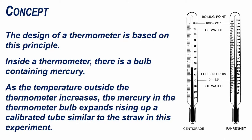Inside a thermometer, there is a bulb containing mercury. As the temperature outside the thermometer increases, the mercury in the thermometer bulb expands, rising up a calibrated tube similar to the straw in this experiment.